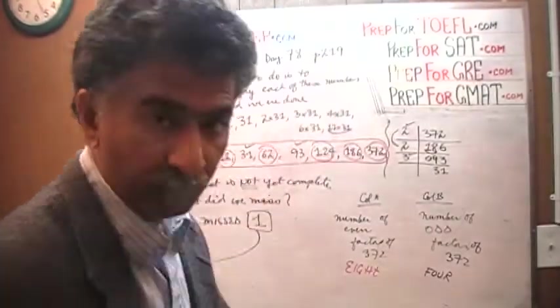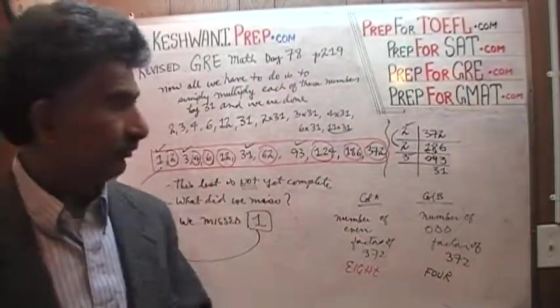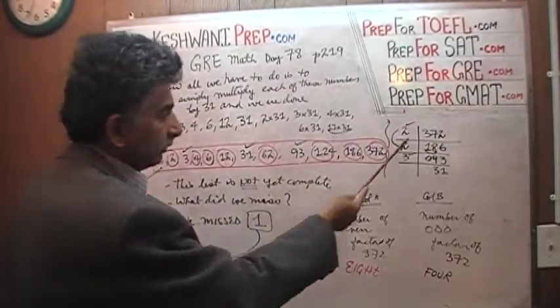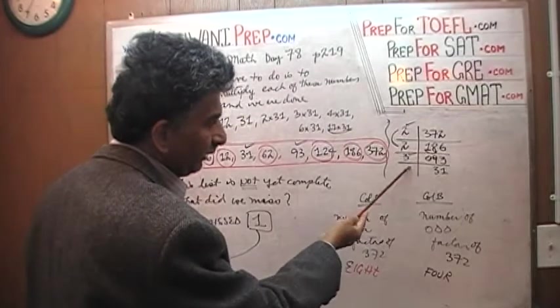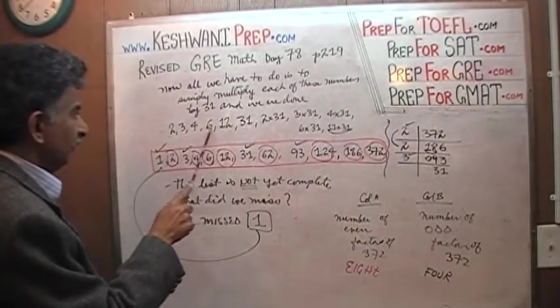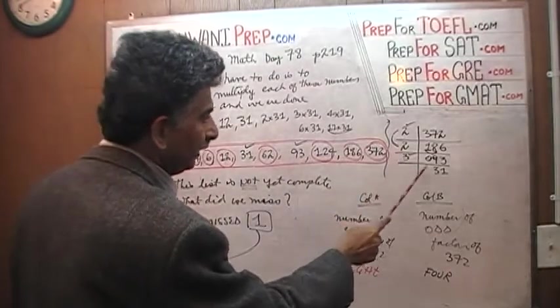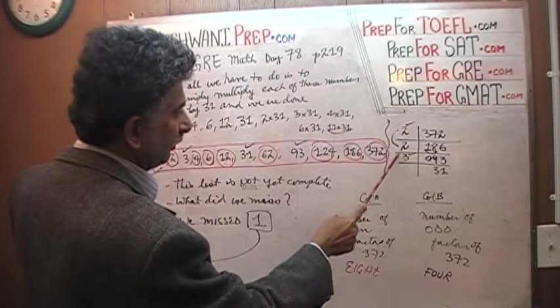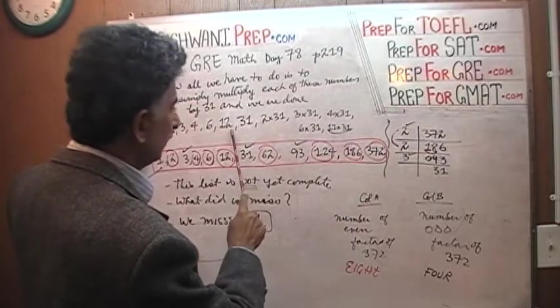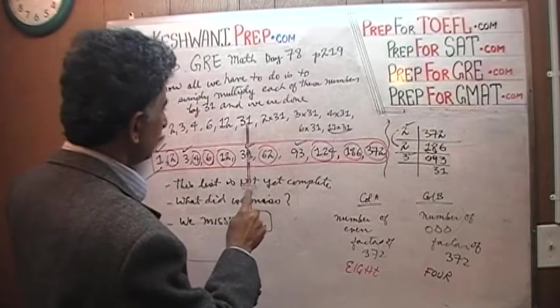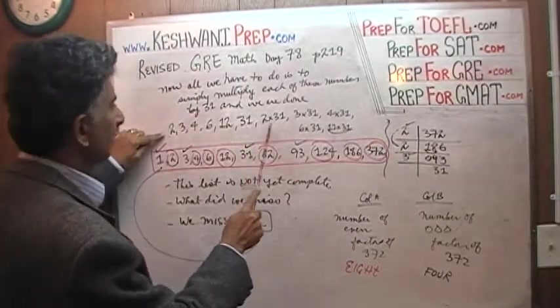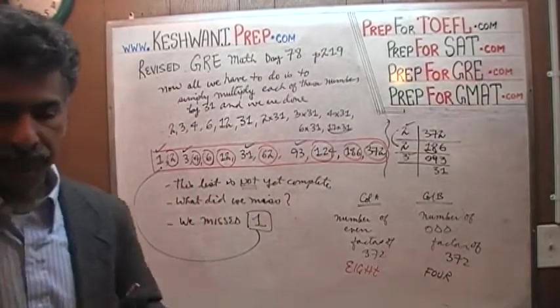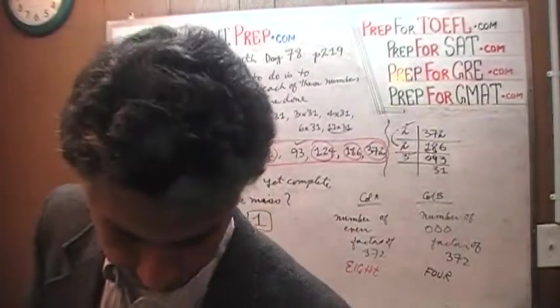So you need to understand what it means to be the factors of something, what it means to be the prime factors of something, then you must have the ability to list all the factors. Pay attention, see how quickly it goes. This part is very quick. So now we know the factors are 2, 3, 4, 6, 12, and 31. Then you put down your 31 and simply go 2 times 31, 3 times 31, 4 times 31, 6 times 31, 12 times 31. You're done. Those are the factors of 372. Do you understand?